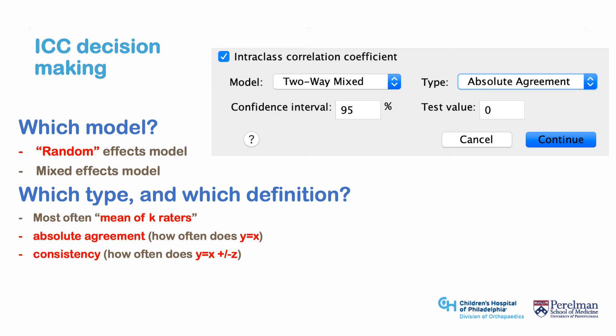Without getting too far into the weeds of ICC, when deciding which ICC to use, you first have to choose the model: either a mixed or random effects model. Random effects models are usually preferable if one is attempting to make inferences about the general population of raters, which is typically the case in most studies of agreement in surgery. Next, you determine the type: most often you will be interested in the mean of k raters, but less frequently you may be interested in comparing to a single more experienced rater. Finally, as far as the definition, you will be interested in either absolute agreement — how often does x equal y — or consistency, which allows for some degree of error.